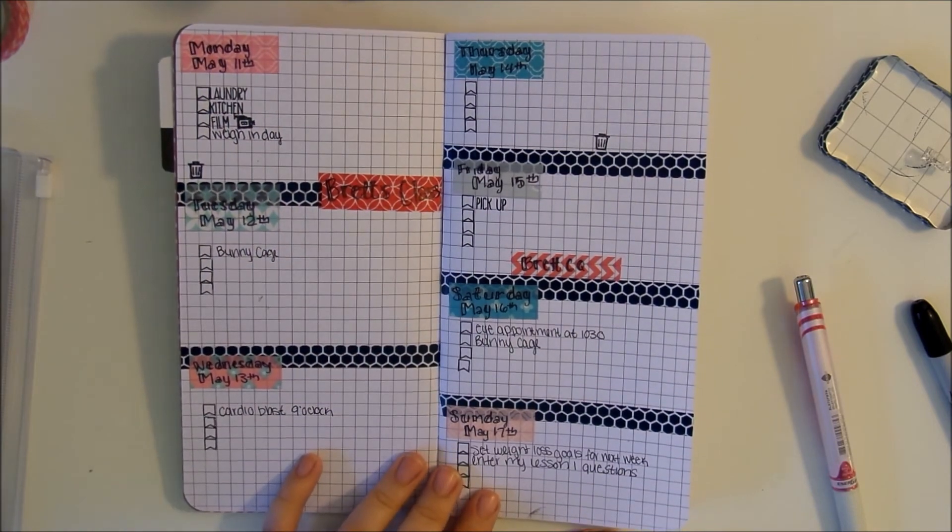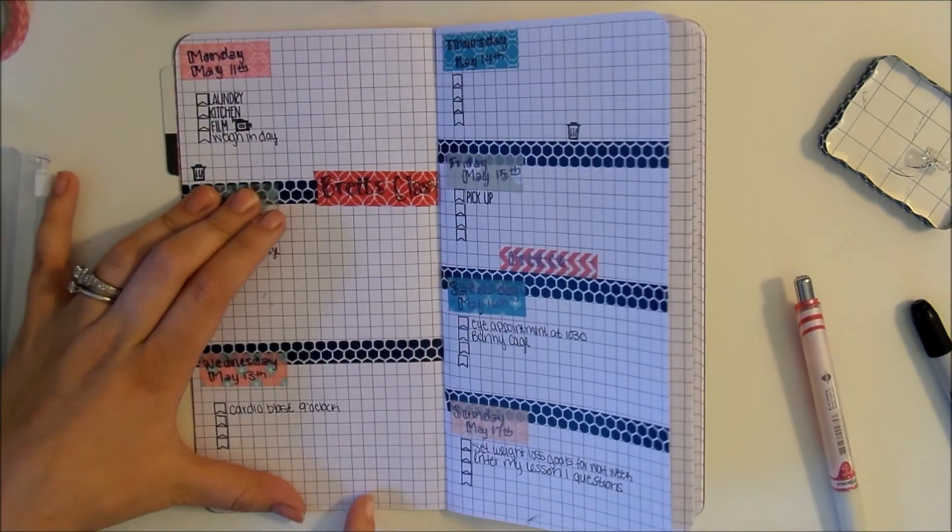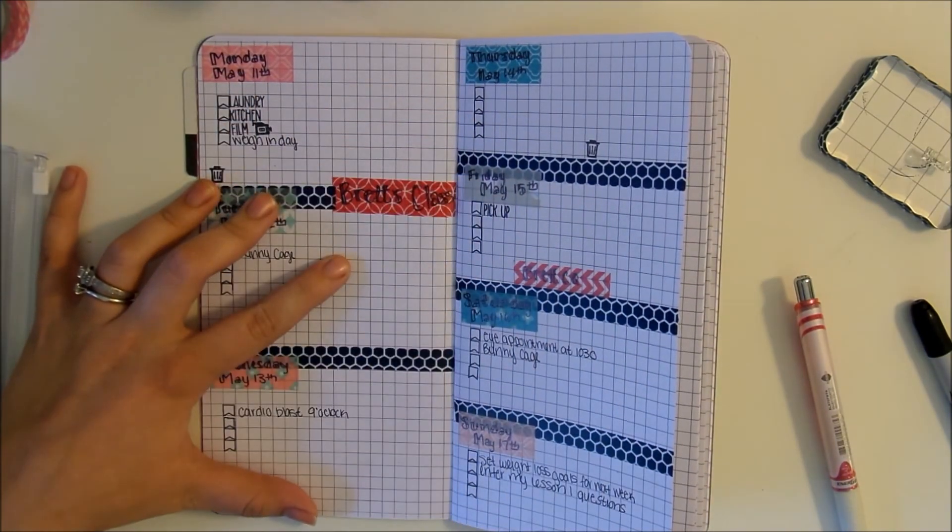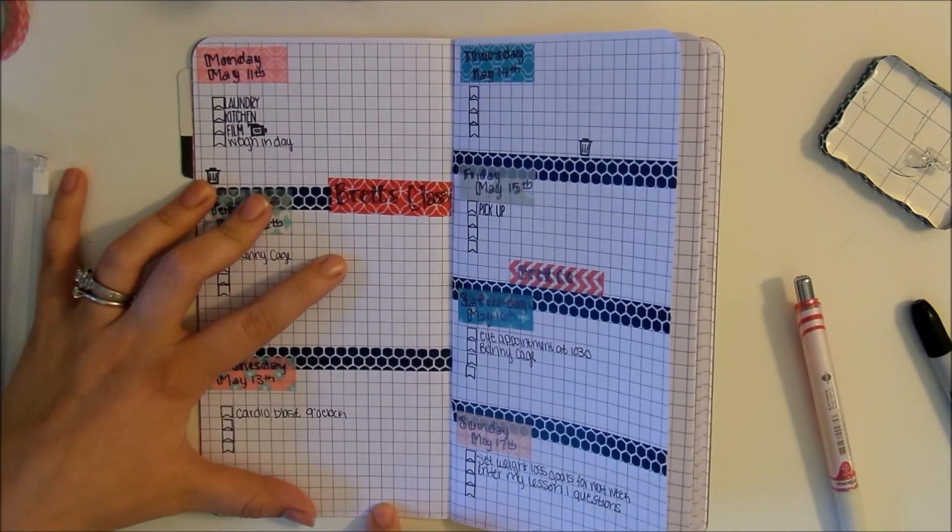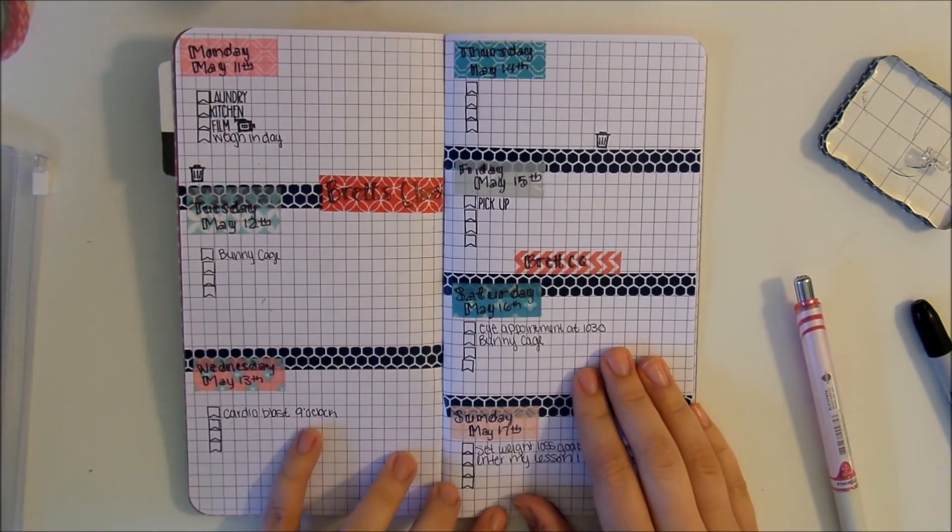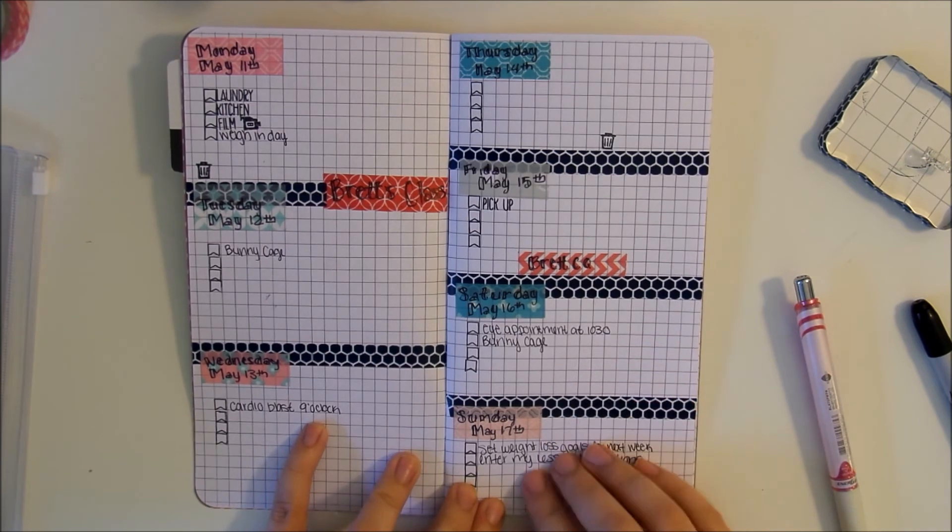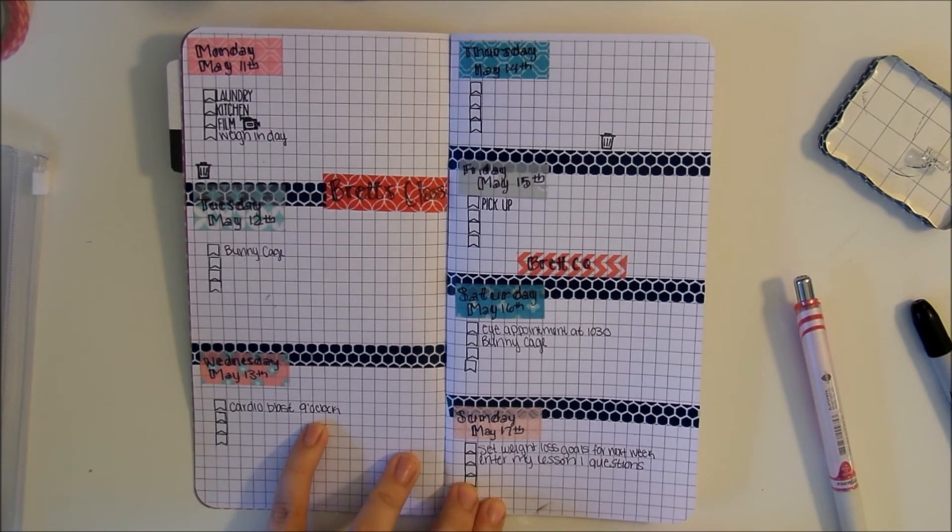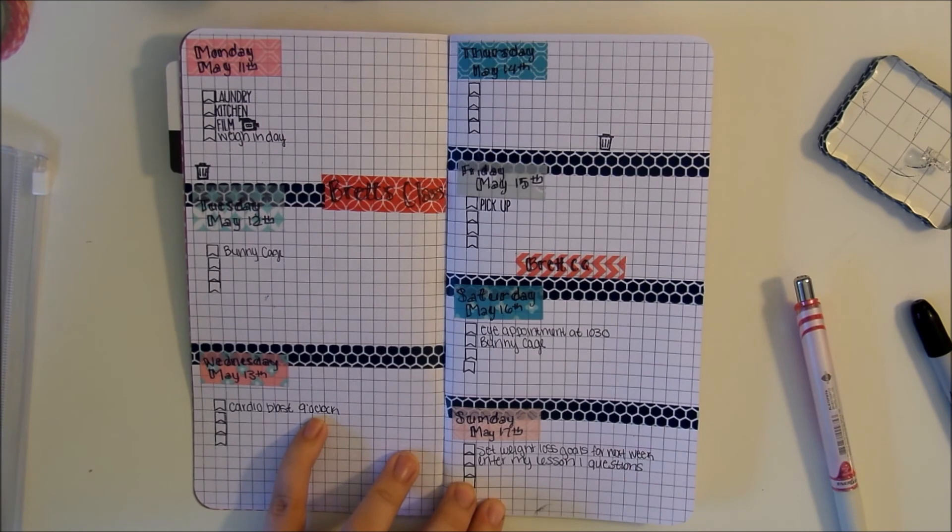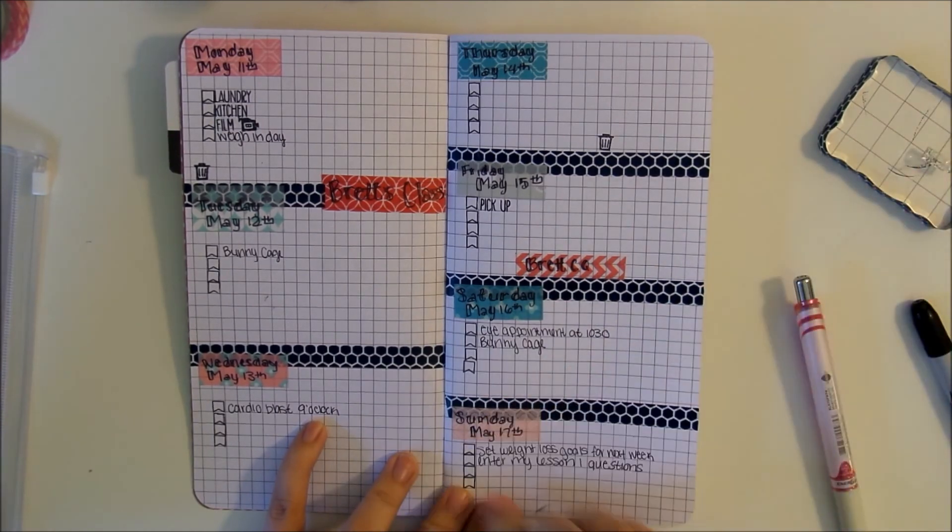If you have a lot of to-dos, you could easily put a piece of washi tape down the center and write your to-dos on one side, your appointments or anything else on the other. You could put a piece of washi down and do quotes or your high and low for the day, or just that kind of stuff. I really like that you can kind of do whatever with this. I just enjoy that.